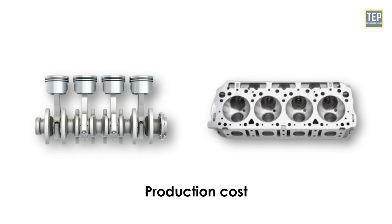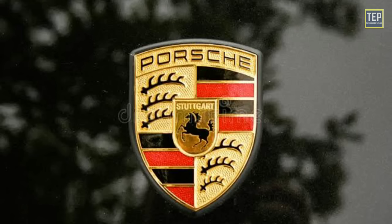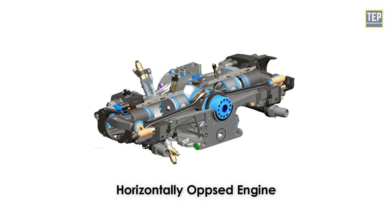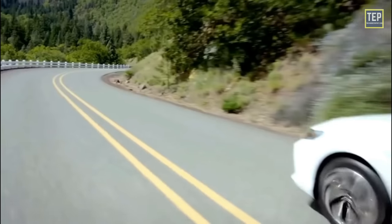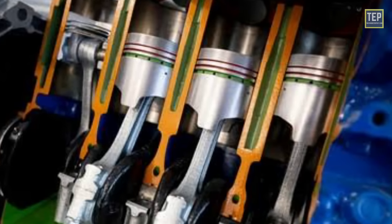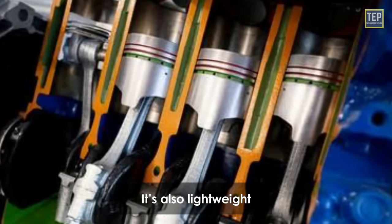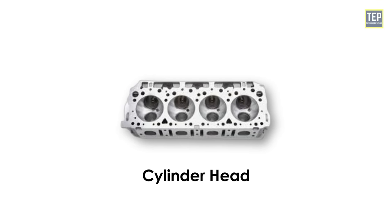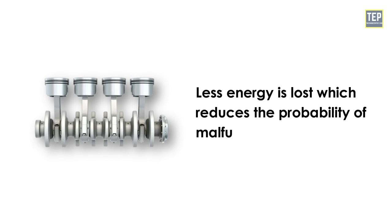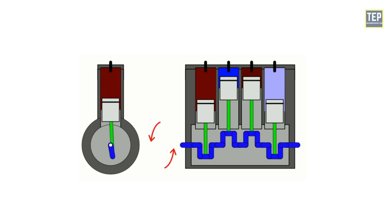Today nearly all four-cylinder engines use the inline four layout; however, Porsche and Subaru are exceptions, using a flat four or horizontally opposed layout. Four-cylinder cars suit every driving situation from city roads to open highways. The inline four is small and compact, fitting in nearly any engine bay. It is also lightweight, with weight further reduced by only one exhaust manifold. With only one cylinder head, there are fewer moving parts than engines with multiple cylinder banks, meaning less energy is lost and reduced probability of malfunctions. Primary forces are balanced because the outer two pistons move opposite to the inner two pistons.